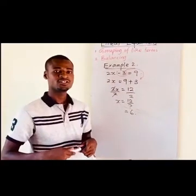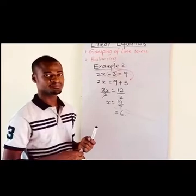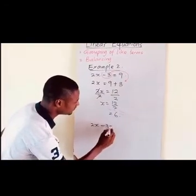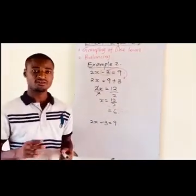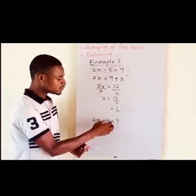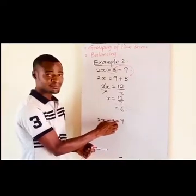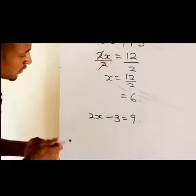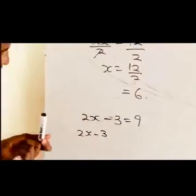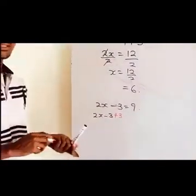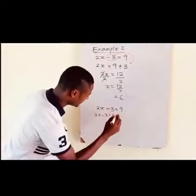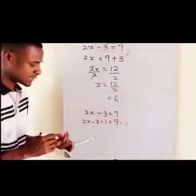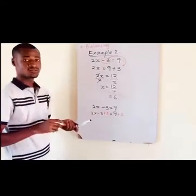Then we will use the balancing method to solve the same equation. We have 2x minus 3 equal to 9. The idea of balancing is to introduce a term that is opposite to the number term so that it will cancel that term. If we want to introduce the opposite of negative 3, we will introduce positive 3. Negative 3 and positive 3 are opposite terms, so they will cancel out to give 0.